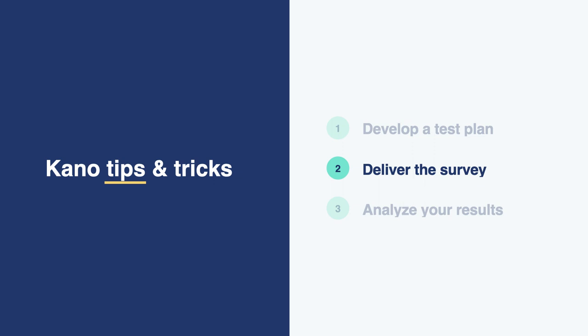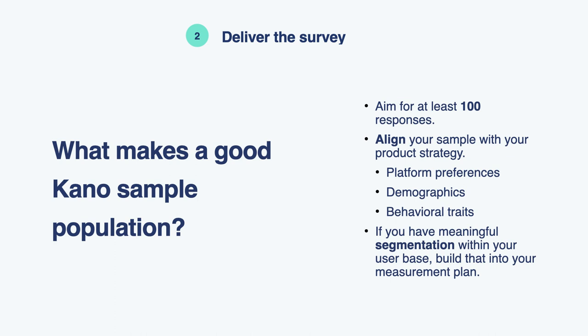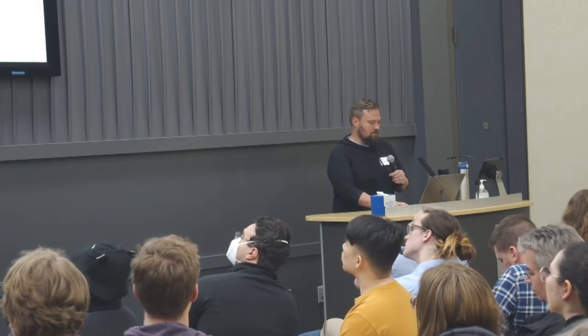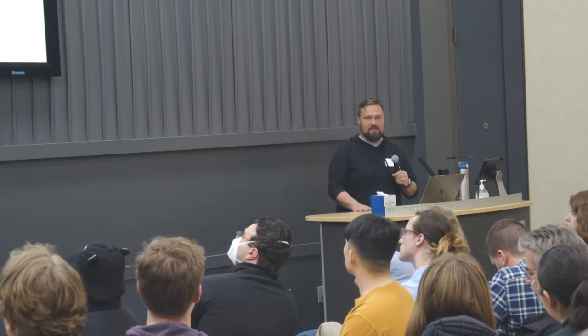There's a lot to consider about the sample you're going to test with. As a general rule, you want at least 100 responses. Beyond that, align your sampling strategy to your product strategy — if you think there's a meaningful difference between consumers who prefer one platform over another, account for that. If there are meaningful differences in demographics or geographic regions, make sure you sample from all groups you want represented. If behavioral traits matter, like how frequently people use your product, make sure that's in your sampling plan.